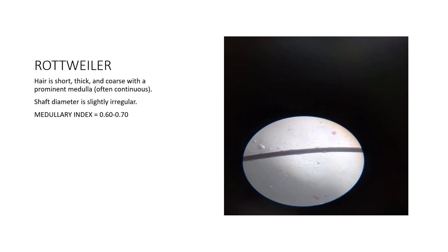This breed's hair is short, thick, and coarse with a prominent medulla. The shaft is irregular, and the medullary index range is also different from the previous ones. From all these observations, we can conclude that different dog breeds have distinct morphological structures and different medullary indices, which is helpful in forensic investigation. This is all. Thank you.